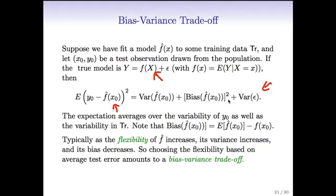Then there's a quantity called the bias of f-hat. The bias is the difference between the average prediction at x0 (averaged over all different training sets) and the true f at x0. Typically, as the flexibility of f-hat increases, its variance increases because it's going after the individual training set provided, which will be different from the next training set. But its bias decreases. So choosing the flexibility based on average test error amounts to what we call a bias-variance trade-off.